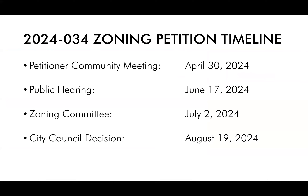Here's a tentative timeline for rezoning petition 2024-034. This evening, April 30, 2024, we're having our required community meeting. We're anticipating going before the zoning committee and city council for a public hearing on June 17, followed by a recommendation from the zoning committee on July 2, with an ultimate city council decision date of August 19, 2024. These dates are subject to change pending any necessary deferrals.